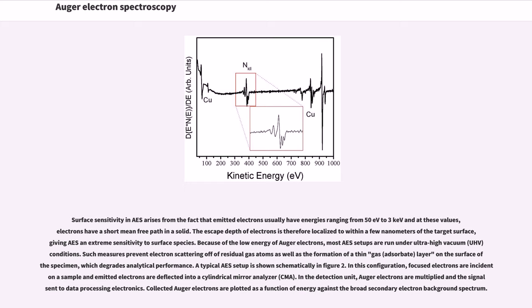In this configuration, focused electrons are incident on a sample and emitted electrons are deflected into a cylindrical mirror analyzer. In the detection unit, Auger electrons are multiplied and the signals sent to data processing electronics. Collected Auger electrons are plotted as a function of energy against the broad secondary electron background spectrum.